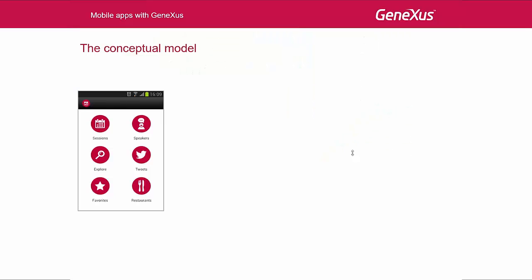Now we will study their conceptual model. Here we can see the four types of screens available. First of all, this screen is an options menu, and will be the point of entry of our smart device application. That is to say, when the user opens the application, this screen will be the first one displayed.